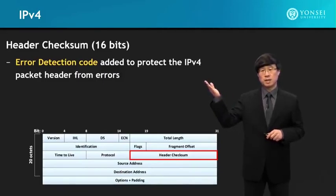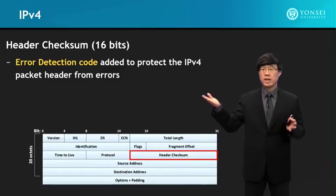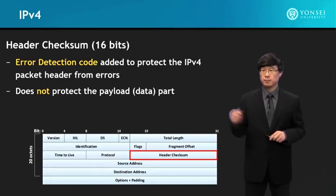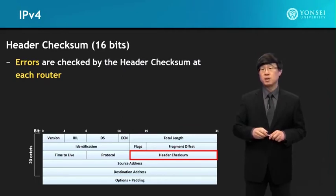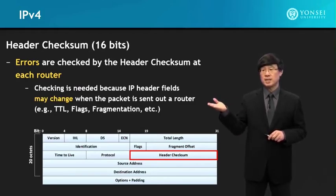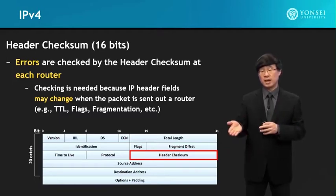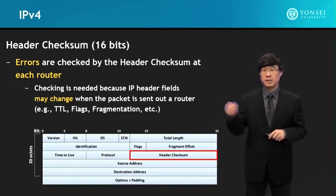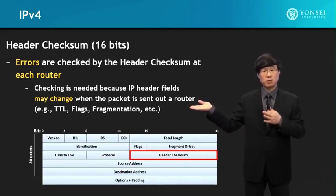The header checksum includes the error detection code such that the IPv4 packet header is protected — it does not protect the payload part. Errors are checked by the header checksum at each router, and this is because fields within the packet do change. When they change, the header checksum is recomputed. Fields that change hop by hop include the time to live (consistently decreased), the flags, and fragmentation options.